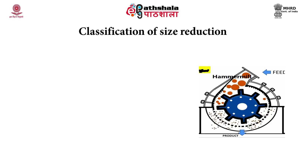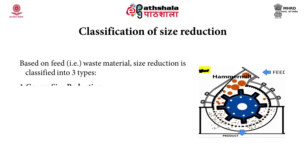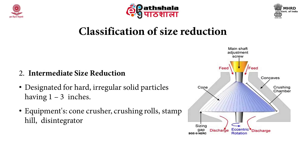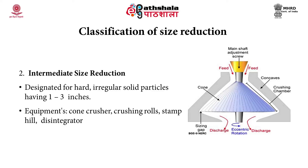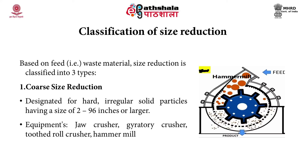Size reduction is classified into three types. First, coarse size reduction — designated for hard, irregular solid particles having a size in the range of 2 to 96 inches or larger. The major equipments used include jaw crusher, gyratory crusher, toothed roll crusher, and hammer mills.